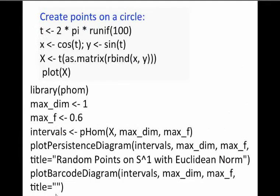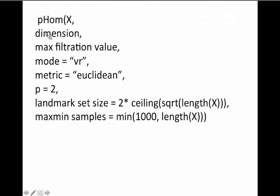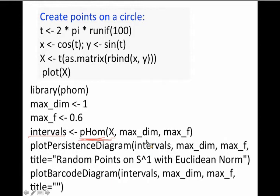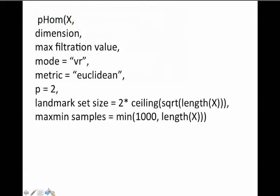Now let's look at what the FOM command actually does. The FOM command outputs a data structure into an item called 'intervals'. These commands were copied and pasted from the FOM manuals. You need at least three options: your data, your max dimension, and how large you want your epsilons to be. But there are additional options as well. Let's go through each individually, starting with the metric.